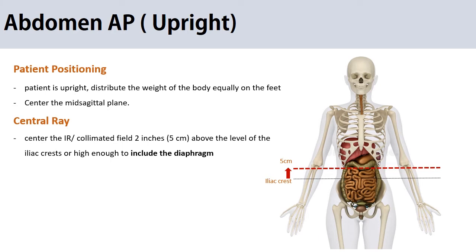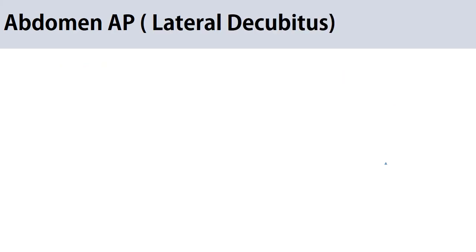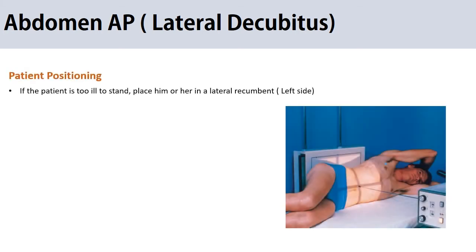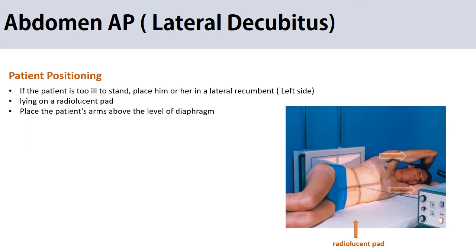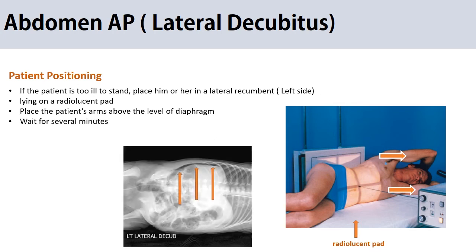If the patient is unable to stand, lateral decubitus can be used as an alternate for the upright x-ray. Have the patient lie on the left side on a radiolucent pad and ask them to raise their arms above the level of the diaphragm. If possible, wait about 5 to 10 minutes — at least 5 minutes — so any air in the intraperitoneal space will rise up away from the gastric gas.